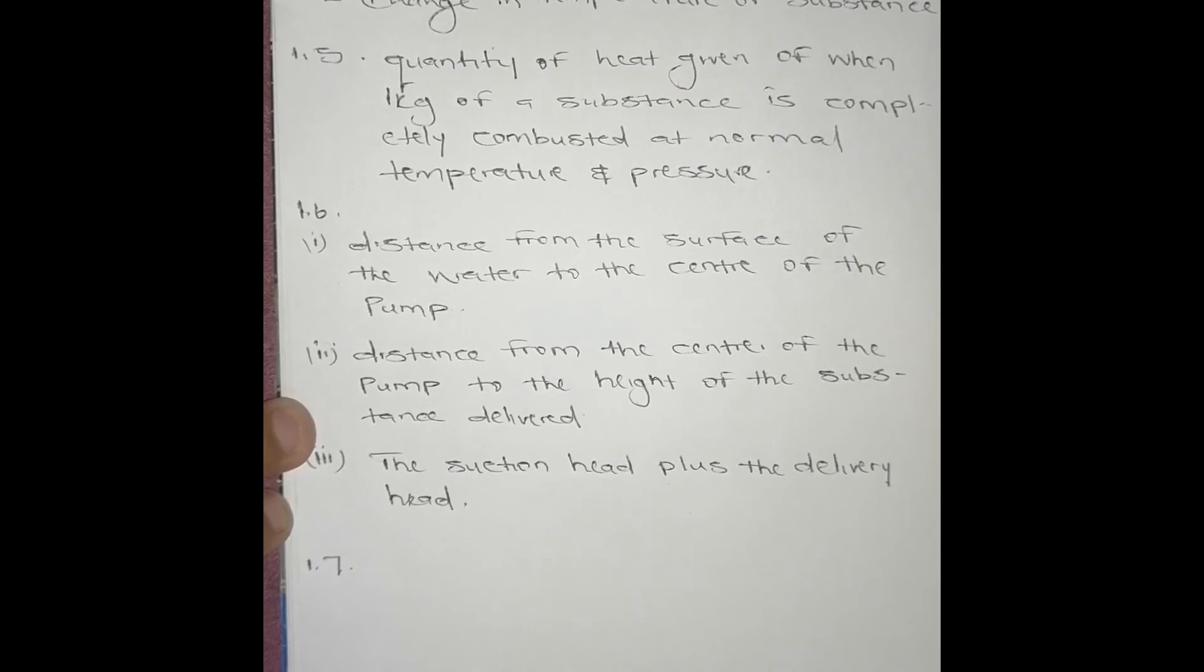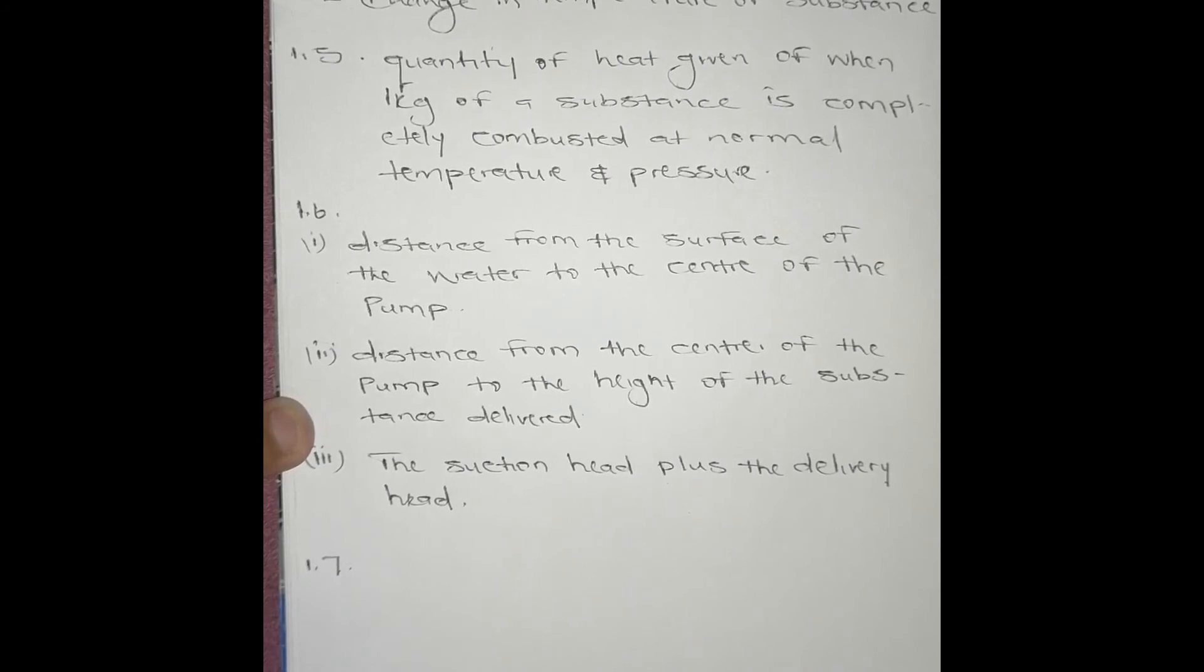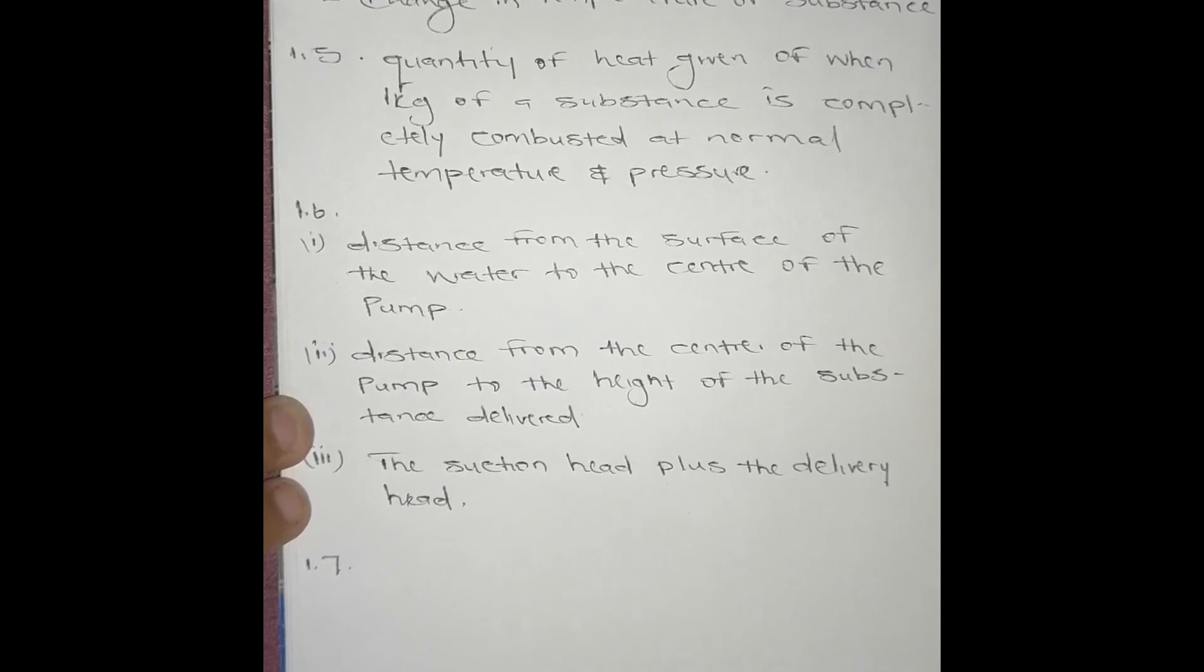Faraday's second law of electrolysis deals with electroplating. It determines how much of a mass we need to electroplate a certain object, and also the value of the current, like how many amps we need so that we can deliver the deposit that will be coated to a certain object. So the law says the mass of an element deposited during electrolysis is proportional to the chemical equivalent of the element.